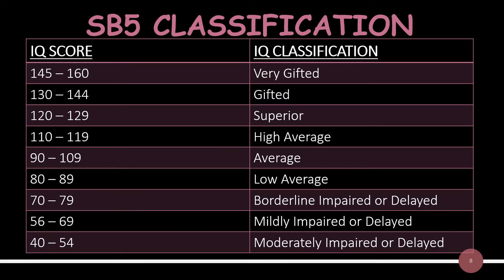This is the SB5 classification. If the IQ score obtained after administering the intelligence test is between 145 and 160, then the individual is said to be very gifted. On the other hand, if the score is between 40 and 54, then the individual is said to be moderately impaired or delayed.